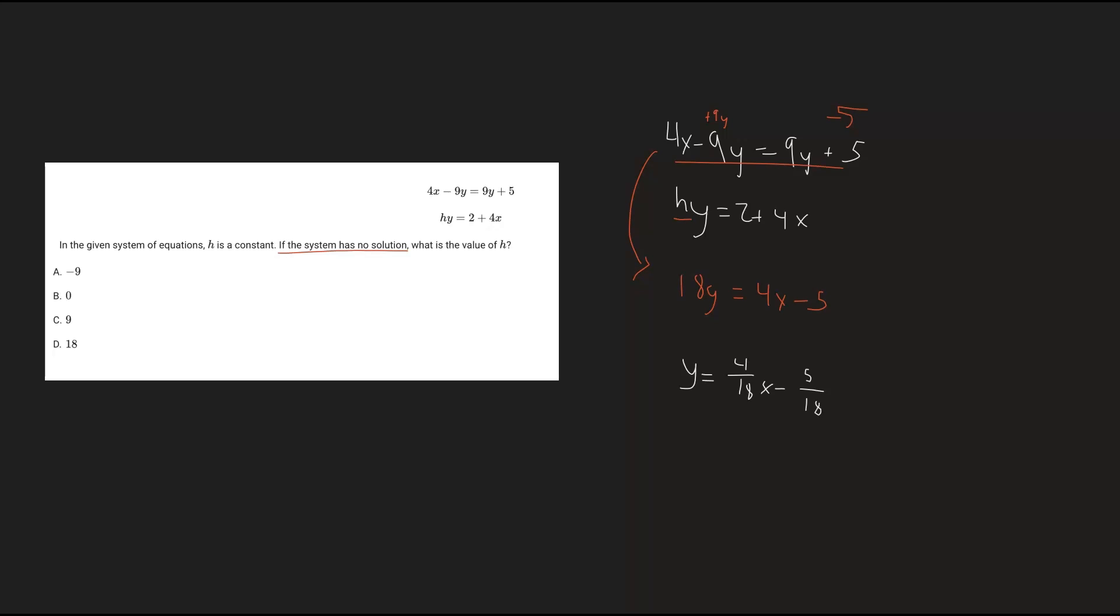All right, so this is our equation. That means what we need to do is get this equation, the second equation right here, to have the exact same slope of 4 over 18 but a different y-intercept. So let's see if we can do that.